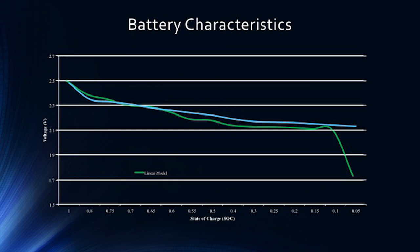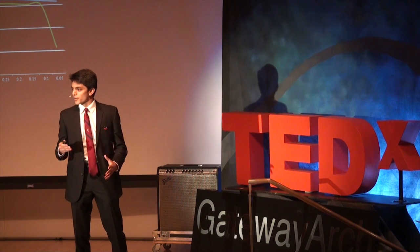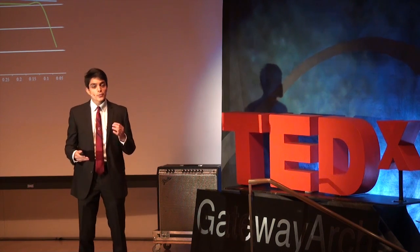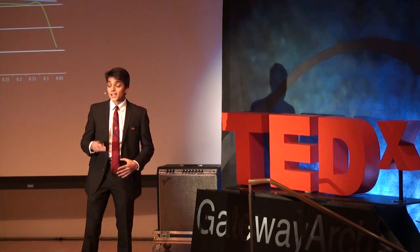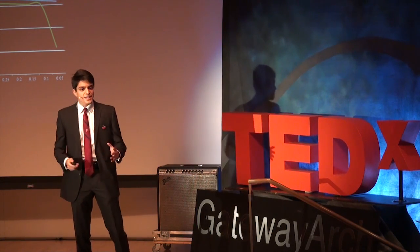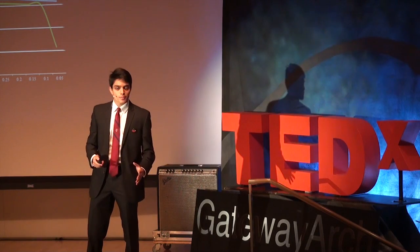Pictured here is a typical graph of the characteristics of that battery in your hybrid. And here is the model that estimates those characteristics. Now, as you can tell, the model is fairly accurate up until a certain point, but then there's a very visible deviation. So the question we ended up asking ourselves was: could we create a model that compensates for this error and is more accurate across the spectrum?